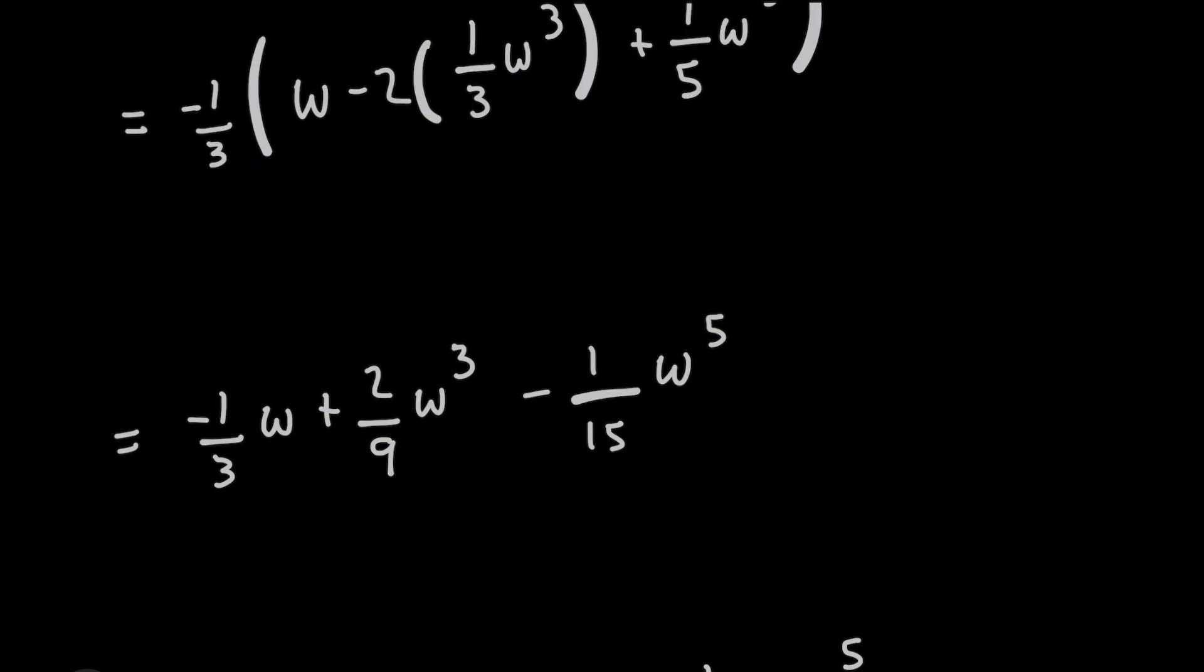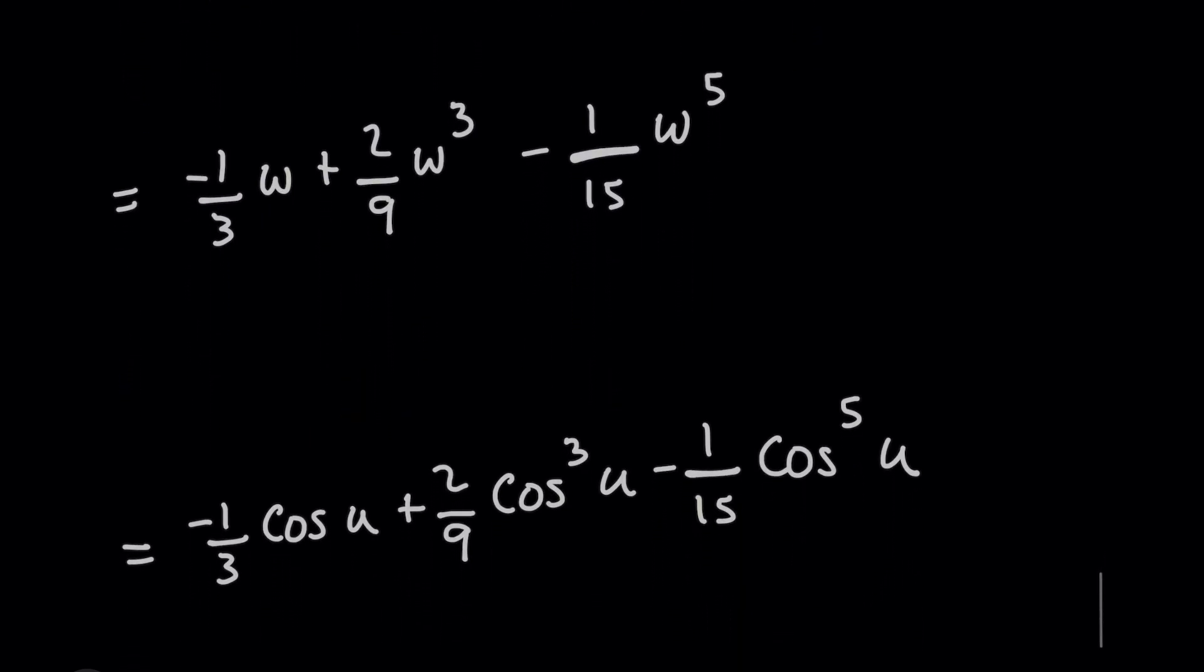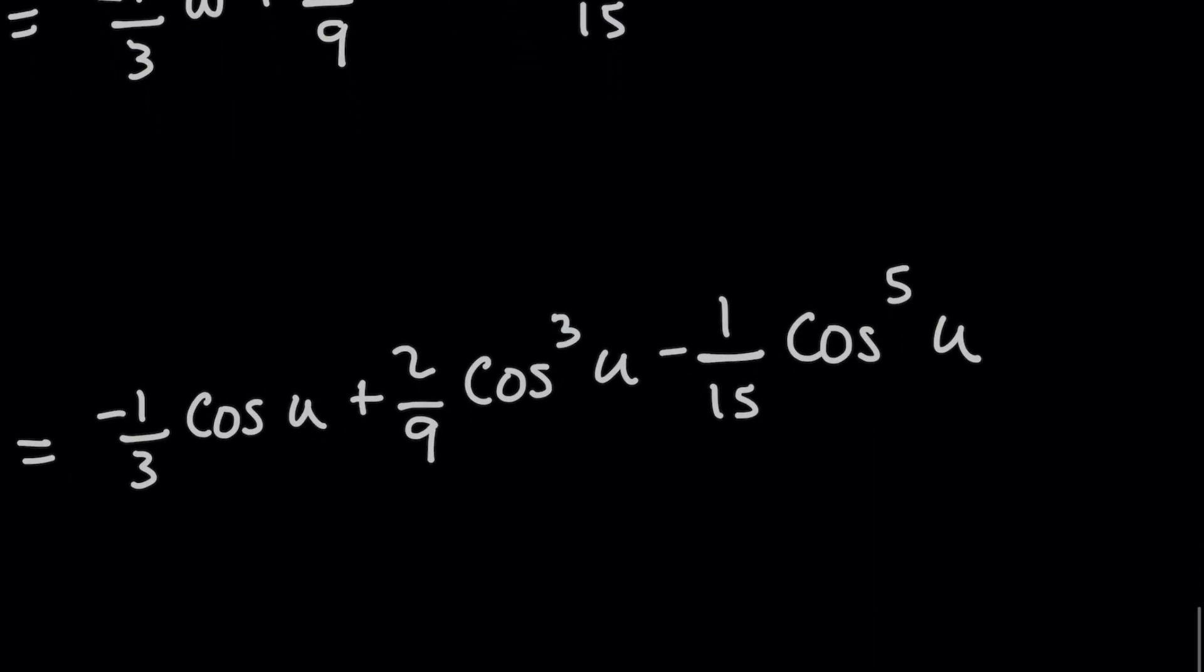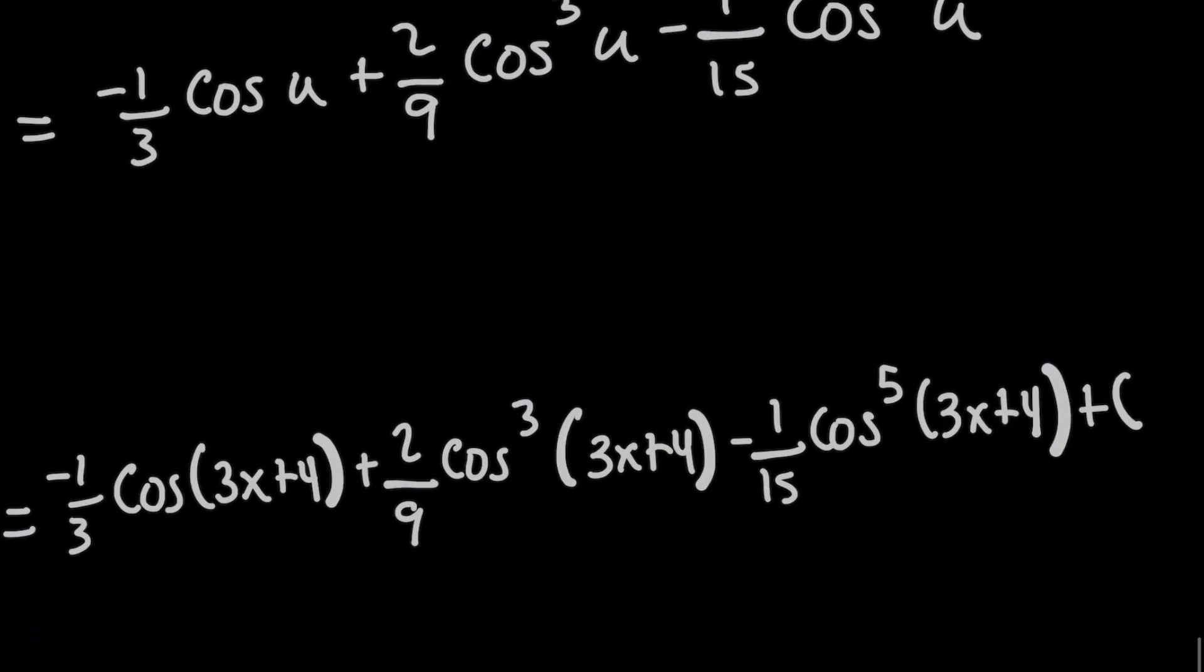But we're not done, because the original problem was written in terms of x. But we do have to make one hop first before we get to x. Because remember, w substitution was not in terms of x, it was in terms of u. So we're going to go ahead and remember here that w was cosine of u based on our u-substitution above. So I'm going to put that back in. And now finally, remember with our very first u-substitution, u was equal to three x plus four. So that's going to be your final answer.